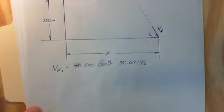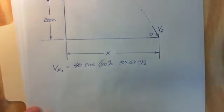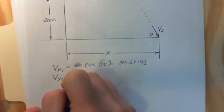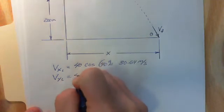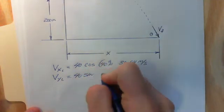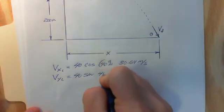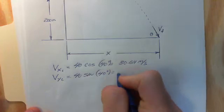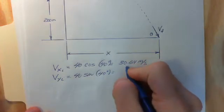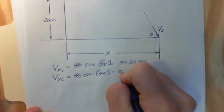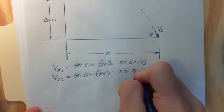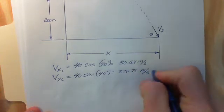We're going to do the same thing with the vertical part. The vertical velocity initial is going to be 40 times the sine of 40 degrees. When we run that through a calculator, we get a value of about 25.71 meters per second.